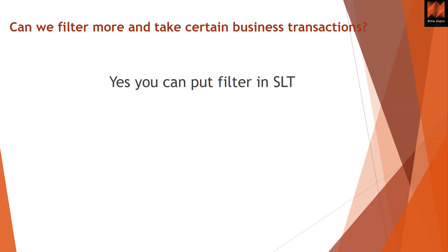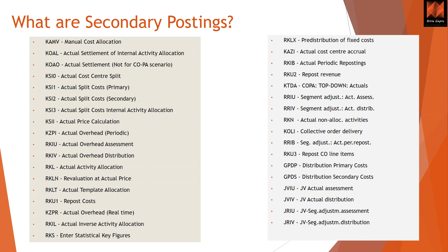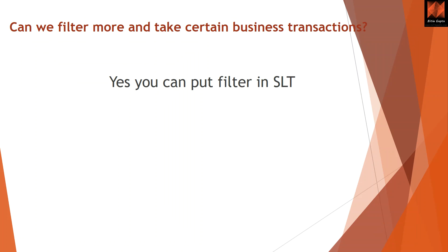Can we filter further and take only certain business transactions? Yes — sometimes a business requirement calls for only specific transactions, for example KOAO, KS13, KSI3, or KSI1. We can filter those transactions through a filter in SLT. There is a field called VRNG, which is the technical name for the business transaction type. You can filter on this field using equals, less than, or greater than conditions — for one or multiple document types. If no filter is applied, the system will pull everything in the list. Note that COIN is ignored by default and does not need to be filtered manually.